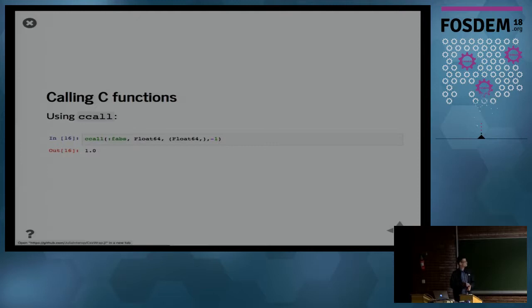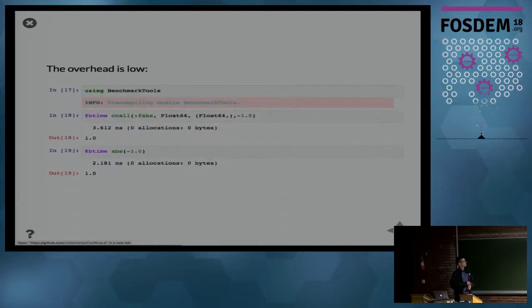Calling C functions happens through the ccall primitive. It's not really a function but it does something at the LLVM level directly. We can call the fabs function to get the absolute value using the standard math library, here of the value minus one, and it returns one as expected. Using the benchmark tools package, we can get an idea of the overheads that this induces. Calling the C function here takes about 3.6 nanoseconds, and we can also compare this with the native absolute value function in Julia. We see that considering this is such a small function, the overhead is really small.